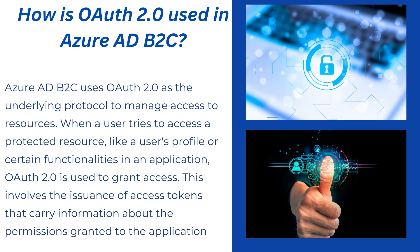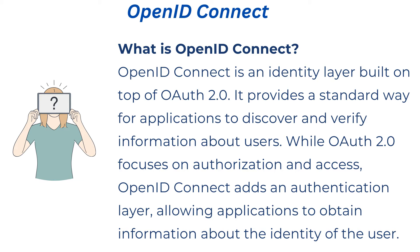Now what is OpenID Connect? OpenID Connect is an identity layer built on top of OAuth 2.0 — this is something you should remember. OAuth 2.0 is the first protocol, and on top of that something is built called OpenID Connect. It provides a standard way for applications to discover and verify information about users. While OAuth 2.0 focuses on authorization and access, OpenID Connect adds an authentication layer allowing applications to obtain information about the identity of the user. Remember: the ID token captures identity information, while the access token specifies which resources a user has access to.